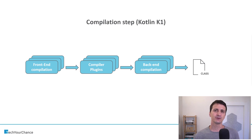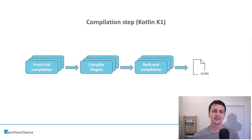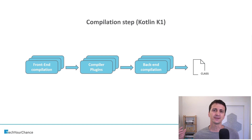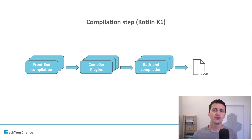This scheme looks very similar to what we had in Java compilation, but instead of annotation processors we now have compiler plugins. It might look like annotation processors in Java and compiler plugins in Kotlin are exactly the same entities, but that's not the case. Compiler plugins are much more versatile and much more powerful tools than standard Java annotation processors. Furthermore, what you see on screen is just one of the places where you can plug compiler plugins into the Kotlin compilation process — you can also plug plugins inside the back-end compilation step.